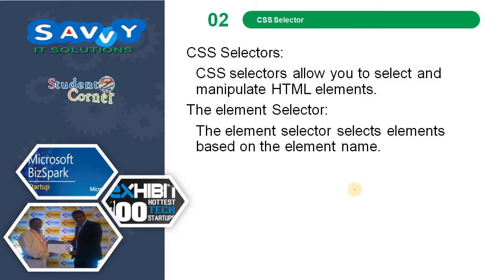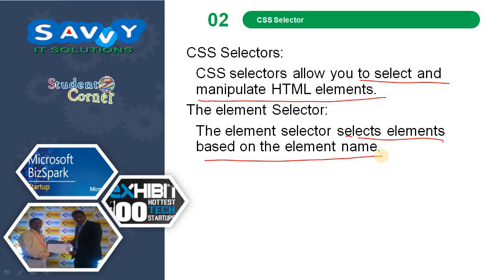Now we are entering into the selectors — CSS selectors. CSS selectors allow you to select and manipulate HTML elements. The element selector selects elements based on the element name. For example, p is one selector — if we apply styling to the p element it automatically reflects. Similarly for h1 through h6, if you take any tag, it reflects.